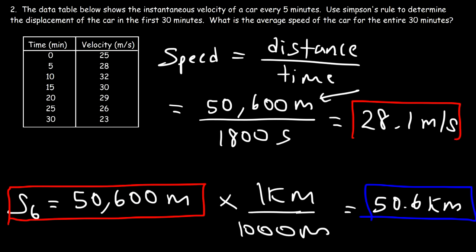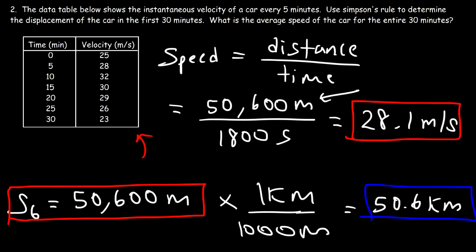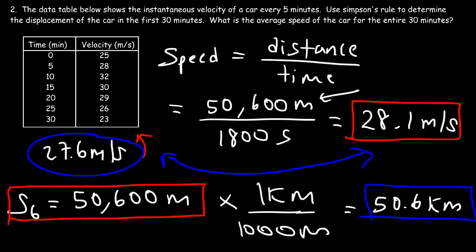Let's compare that to the simple average of all velocities in the table. Adding 25, 28, 32, 30, 29, 26, and 23, then dividing by seven, gives an average velocity of 27.6 meters per second. These two values are very close to each other, which confirms that our answers are reasonable.